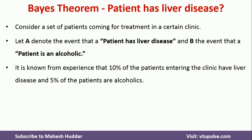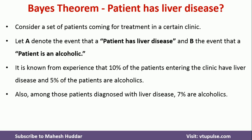From experience or domain knowledge, we have this information. Similarly, among those patients diagnosed with liver disease, 7% are alcoholic. That is one more piece of information known to us.